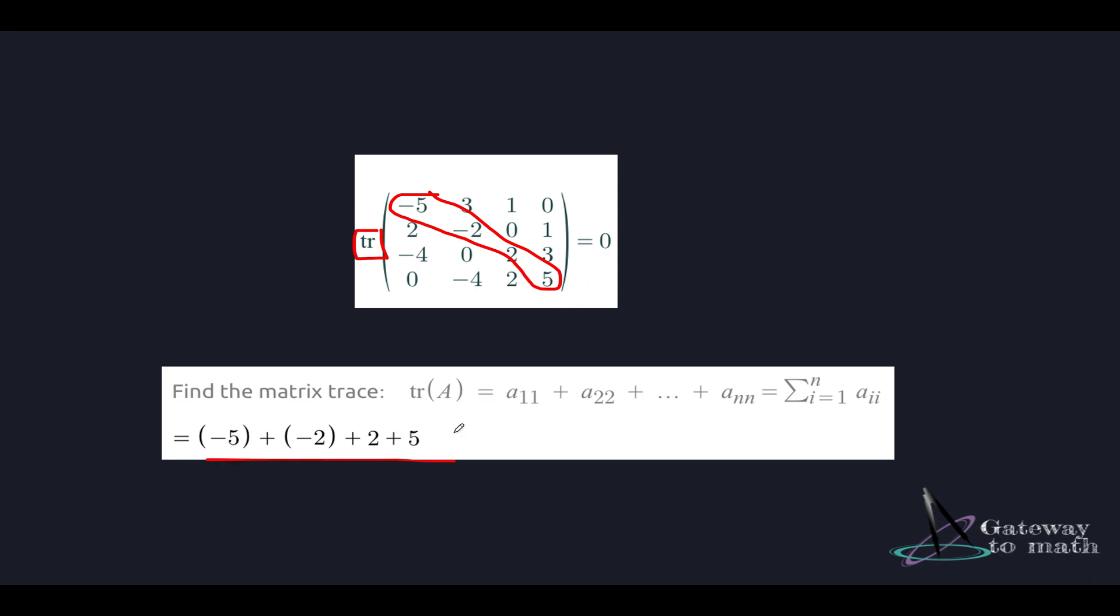The resultant is 0, so the trace of the matrix given to us equals 0. So next time if you see a question on matrix which involves calculating the trace, all you have to do is just add the diagonal entries and that should give you the trace of that matrix. So that's pretty much it, what you need to remember for solving a trace of matrix.